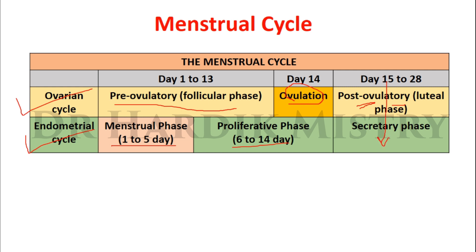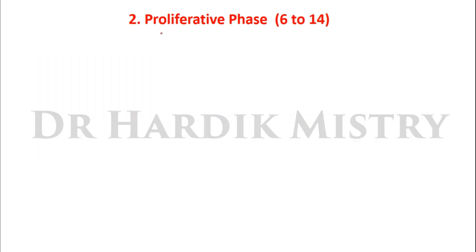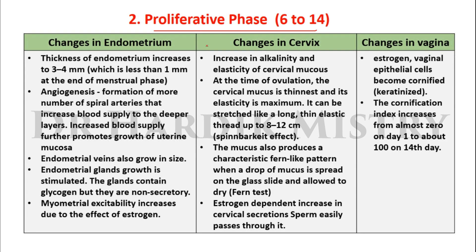The menstrual cycle includes both the ovarian cycle and the endometrial cycle. For better understanding, we will go through the menstrual phase at the end and start from the proliferative phase, day 6 to 14. We will examine changes occurring in the endometrium, cervix, and vagina during this phase.